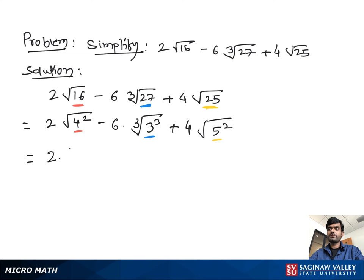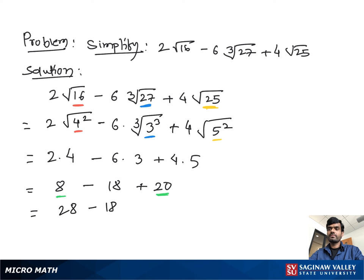Taking 4 out of the radical gives 2 times 4. Taking 3 out of the radical gives 6 times 3. Taking 5 out of the radical gives 4 times 5. So we get 8 minus 18 plus 20. Adding 8 and 20 gives 28, then subtracting 18 gives a final answer of 10.